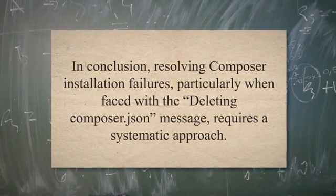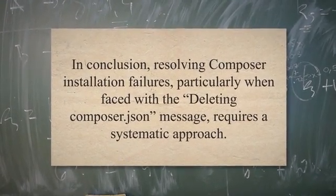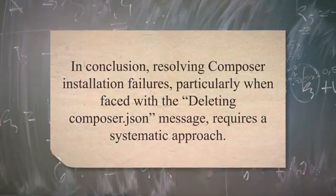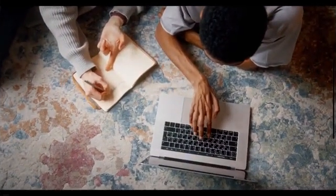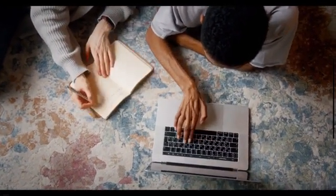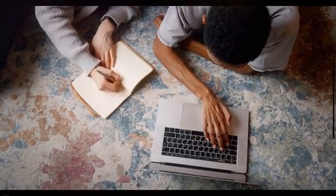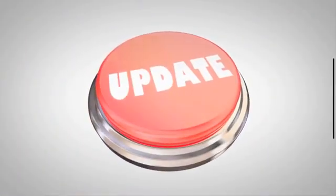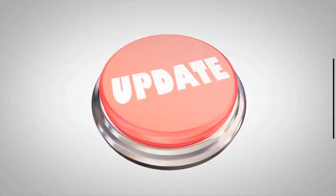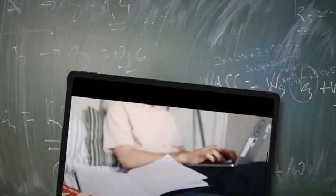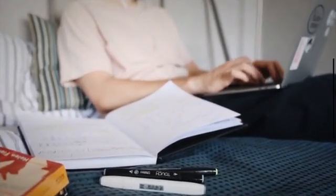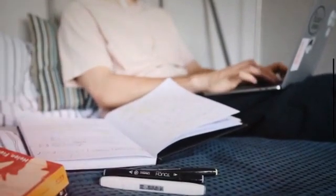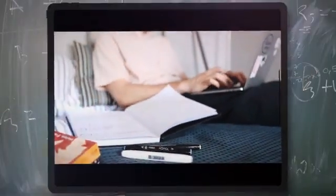In conclusion, resolving Composer installation failures, particularly when faced with the 'deleting Composer.json' message, requires a systematic approach. By following the steps outlined in this article, you can effectively troubleshoot and resolve these issues. Consult the package documentation for specific guidance, and stay informed about updates and compatibility requirements for your project's dependencies. Regularly reviewing and updating your dependencies can help prevent installation failures in the future. By following these steps and staying proactive, you can ensure smooth package installations for your projects.